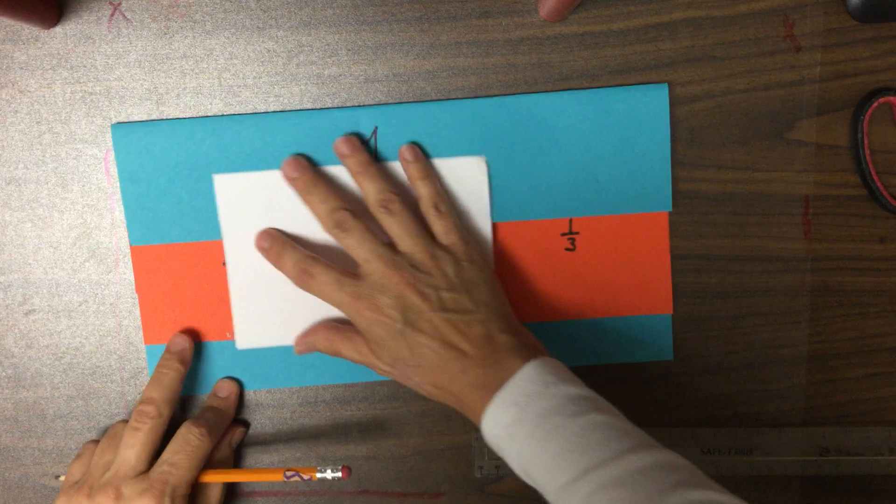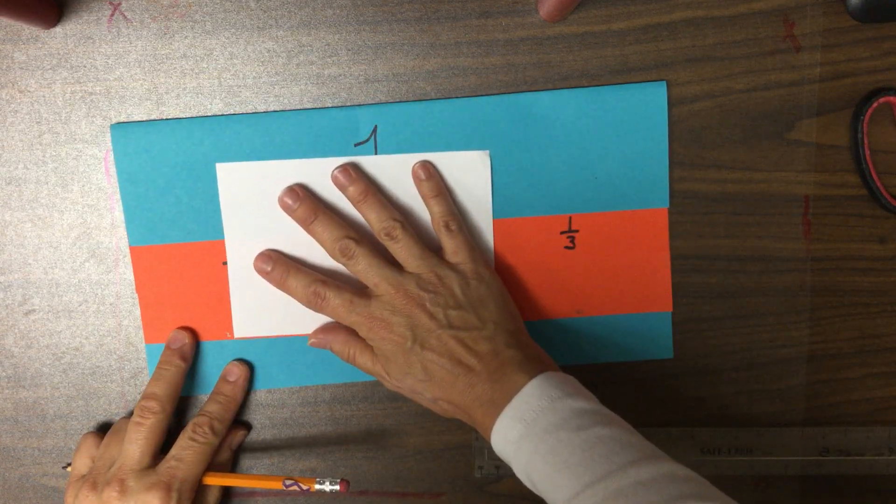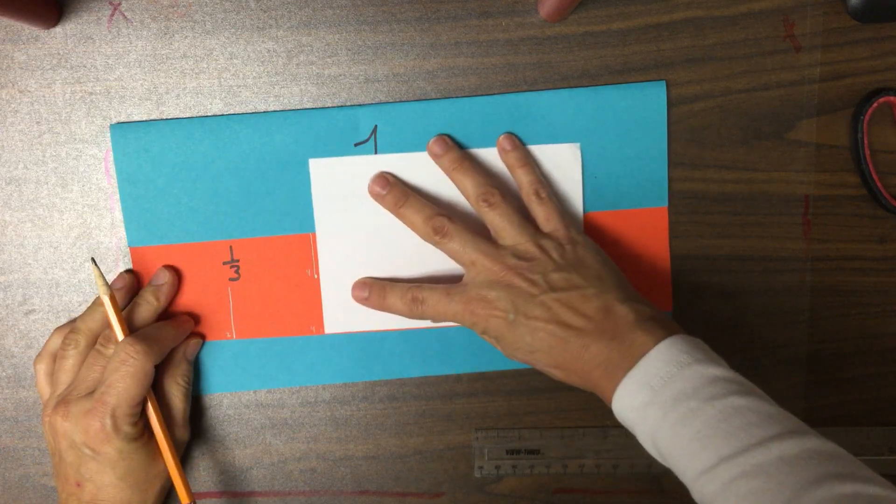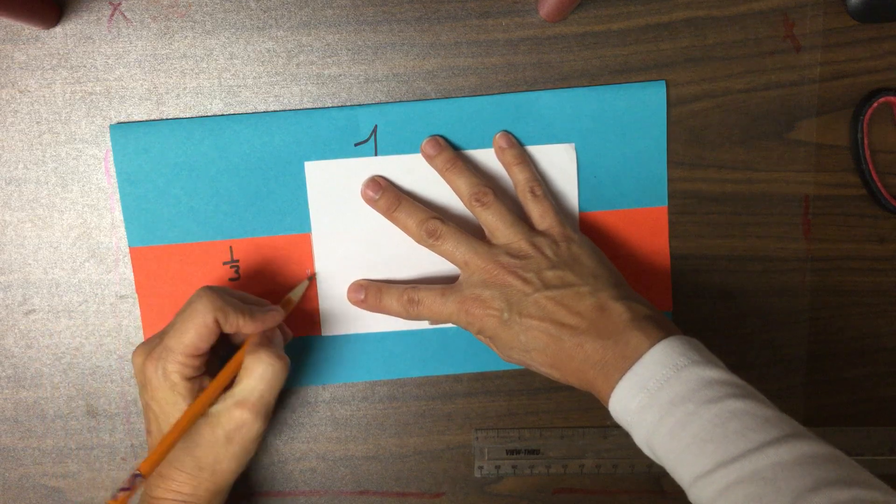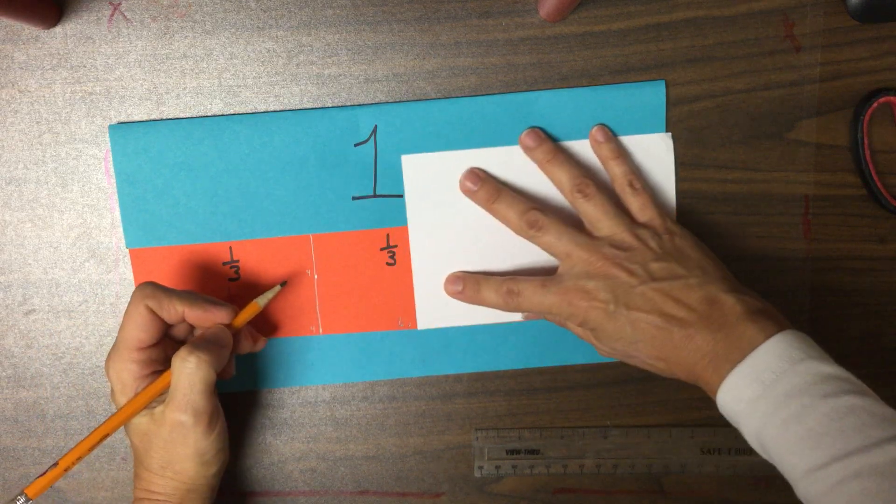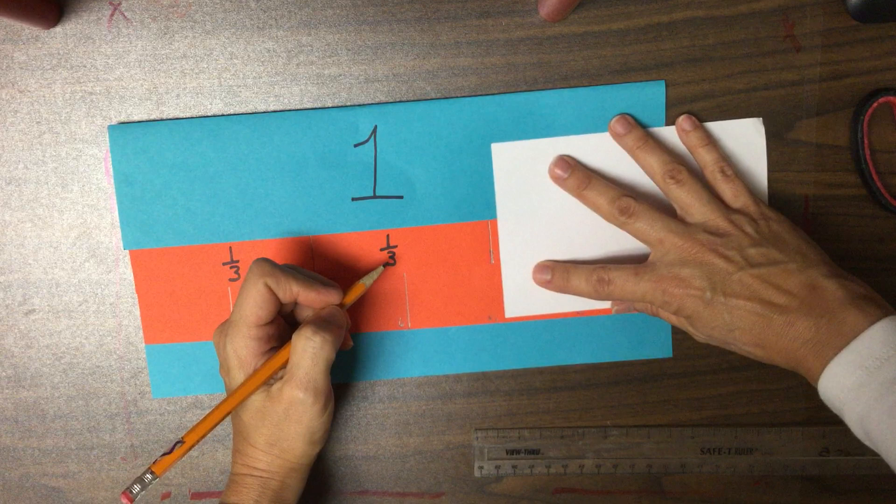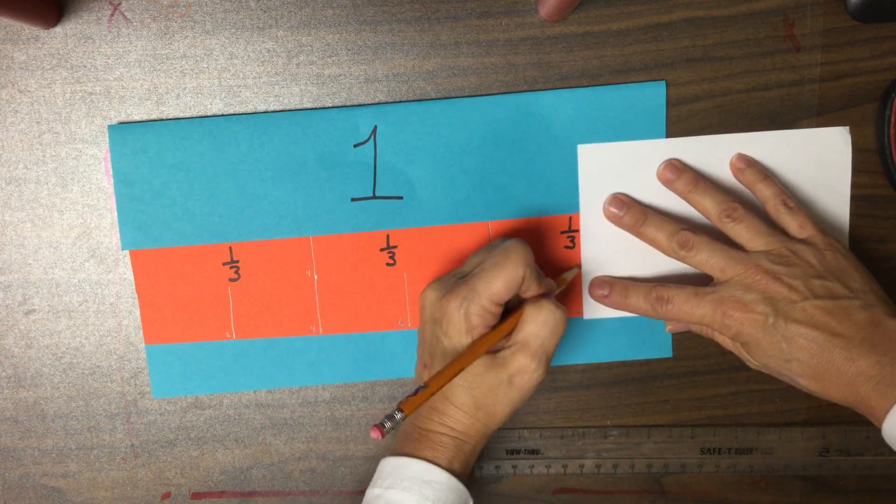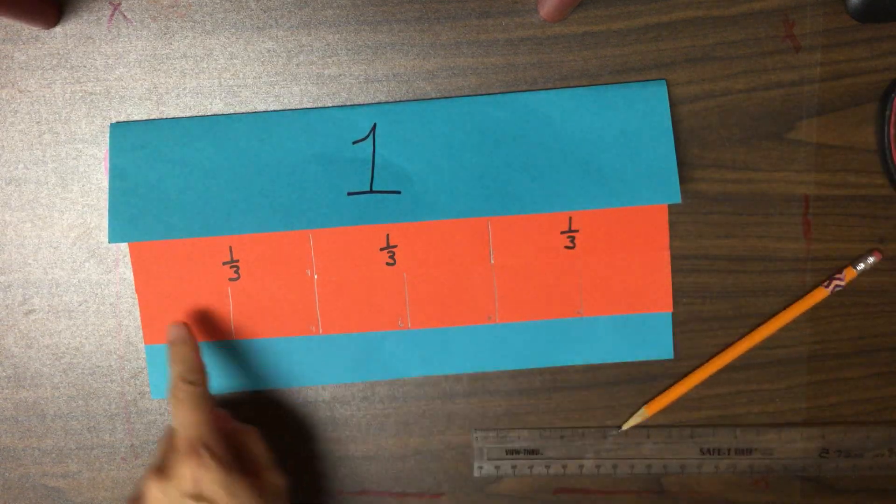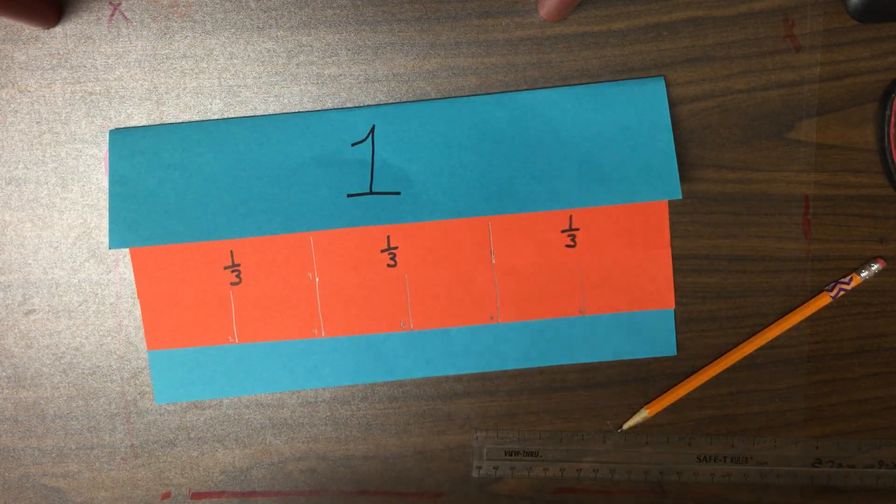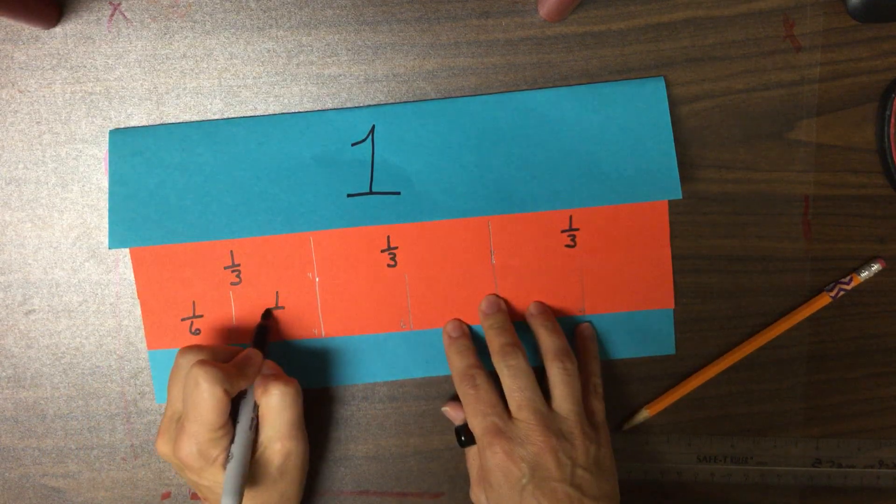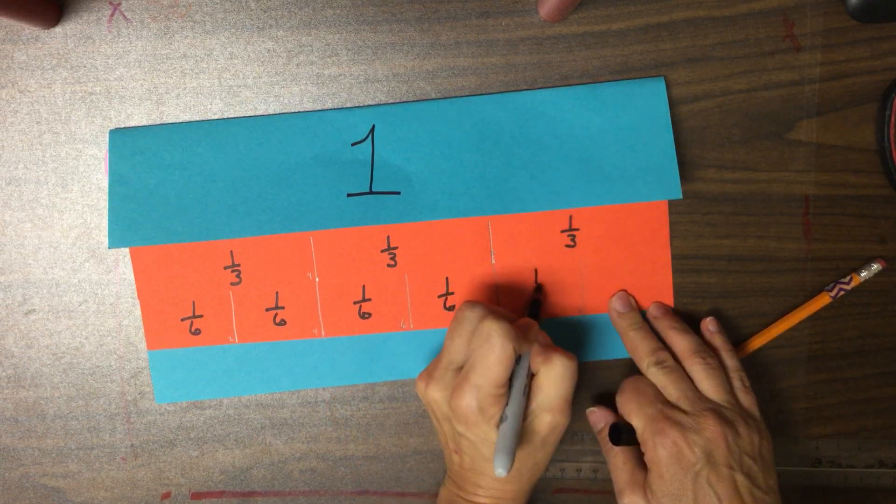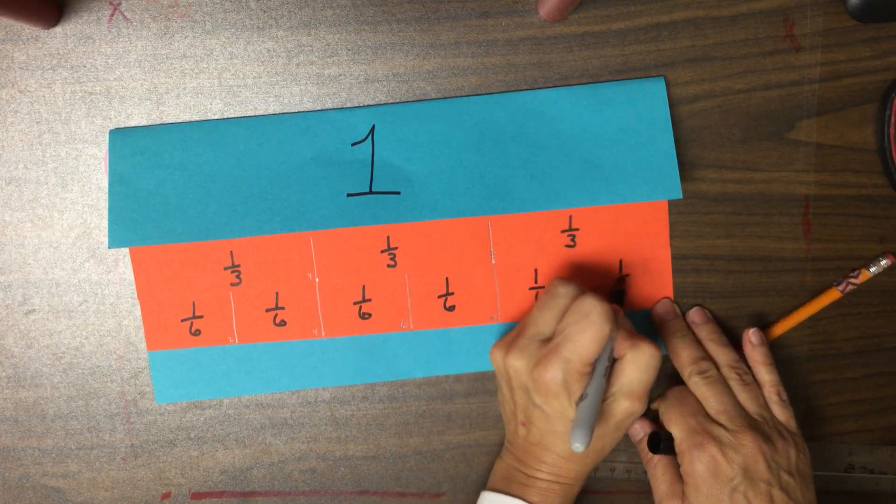All right. So, I'm going to use my index card and make those lines straight up. Two, the fours should match up. Six, the eights should match up. And ten. All right. So, we have one, two, three, four, five, six. So, each one of these parts is one sixth.